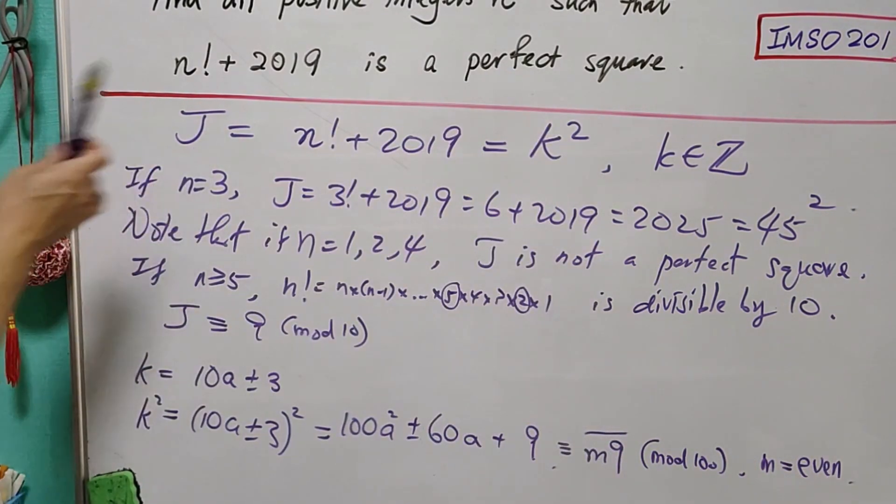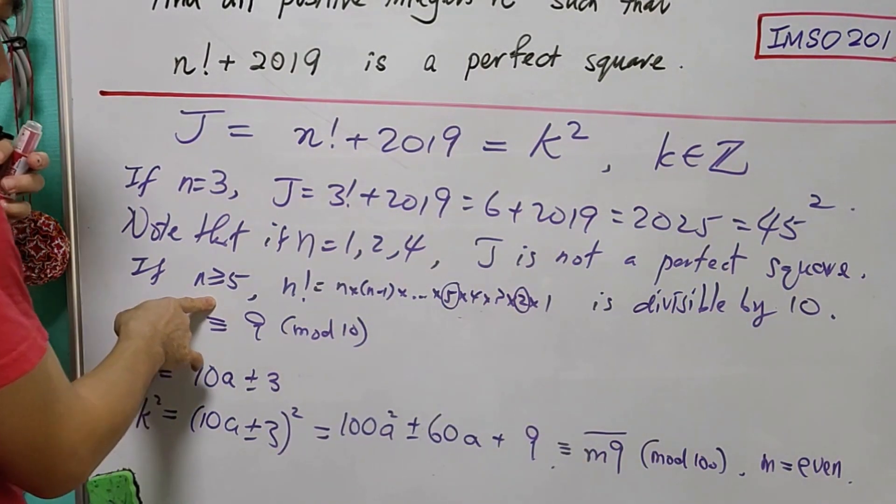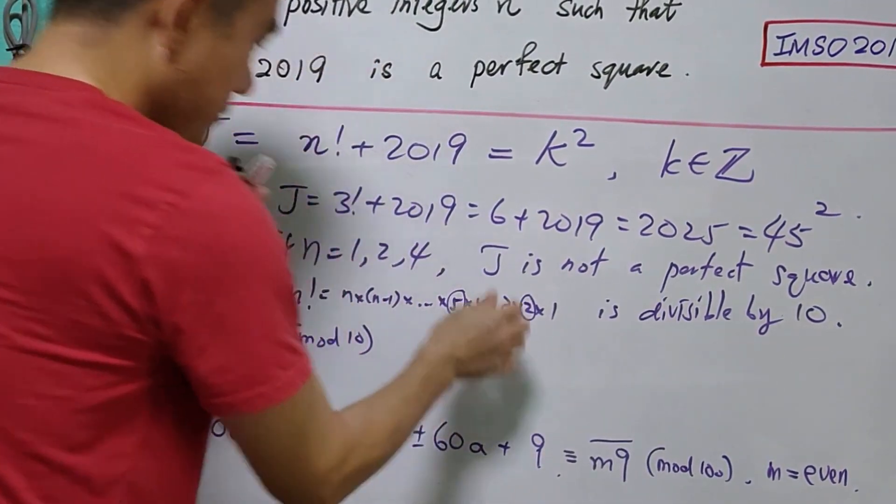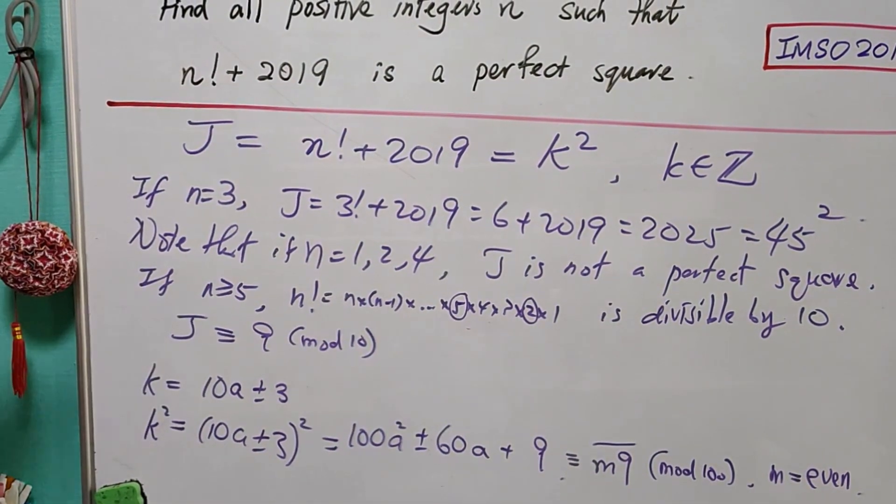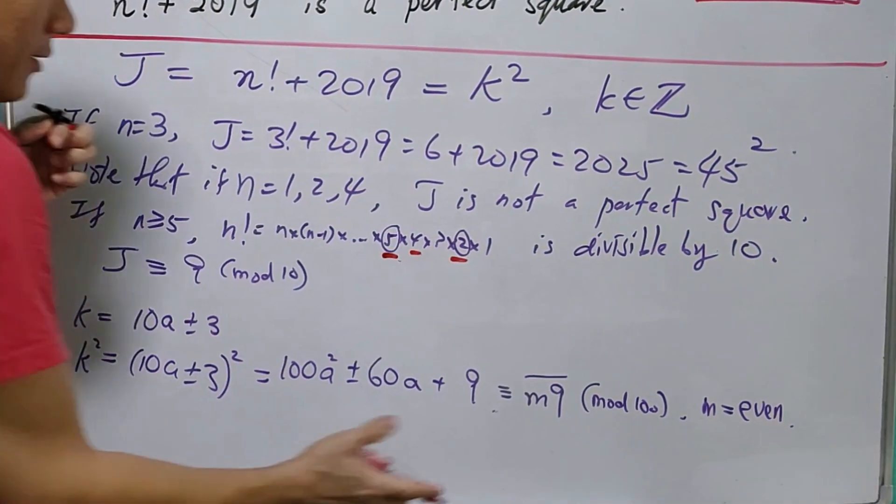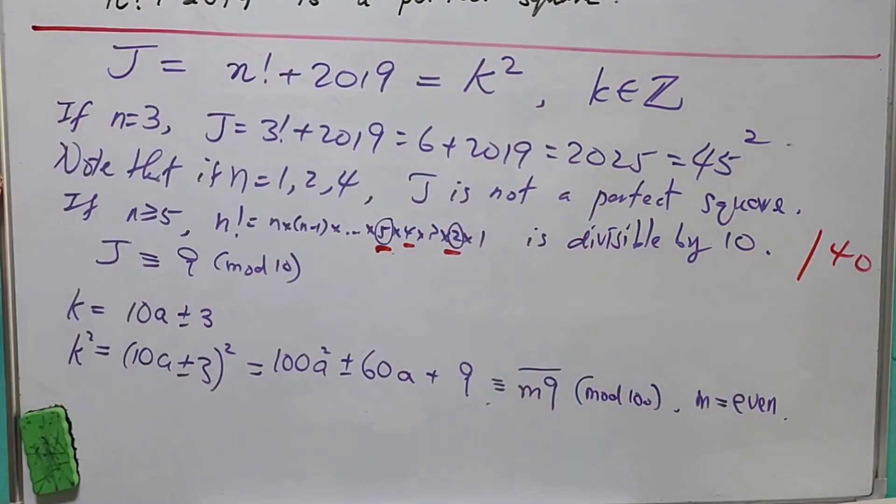Now we go back to look at j. When n ≥ 5, we already see that n! is divisible by 10. Furthermore, we can say that n! is not only divisible by 10, but it is divisible by 40.